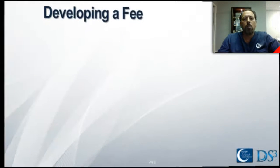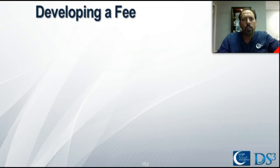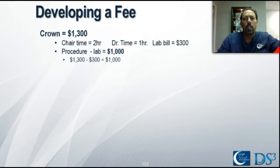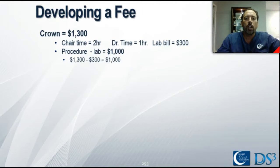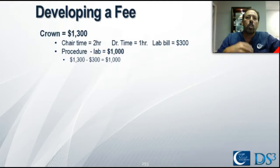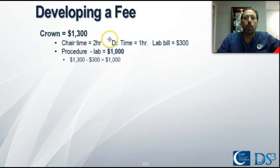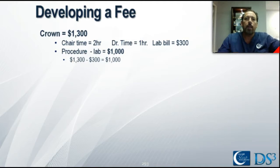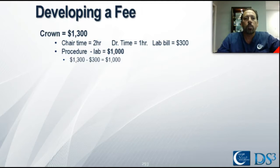A quick example: don't put any credence into these numbers as I go through this demonstration. If we take a crown in your dental office — using easy math — let's use a crown at $1,300. Let's say the total chair time used is around two hours: maybe an hour and a half for the prep and a half hour for the seat. Maybe the doctor's total time is one hour — 30 to 45 minutes at the prep appointment and 15 minutes at delivery. Plug your own numbers in. Let's use a round number of $300 for the lab bill, so we've profited $1,000 after the lab for this crown procedure.